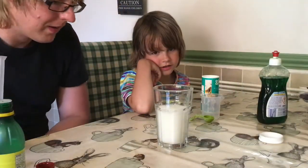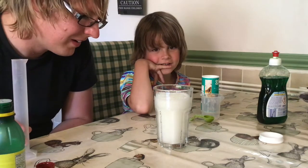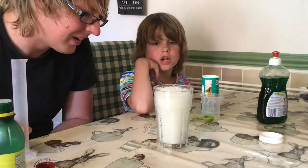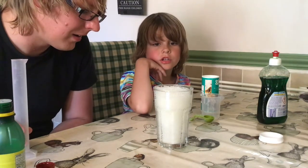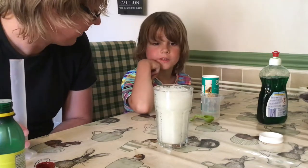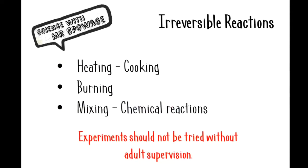And finally, there's mixing. Sometimes when we mix chemicals together, chemical reactions take place. We're going to look at this in the next video. So these are just some examples of irreversible reactions.